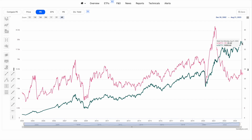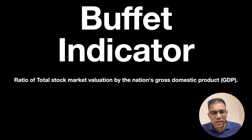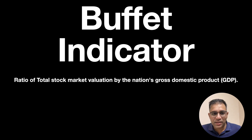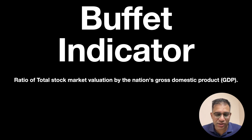The next indicator we are going to look at is the Buffett indicator. The Buffett indicator was created by Warren Buffett and is a very simple one. It is the ratio of the total stock market valuation to the nation's GDP. We are going to look at the Buffett indicator to get a very good understanding of where the Indian stock market stands today.